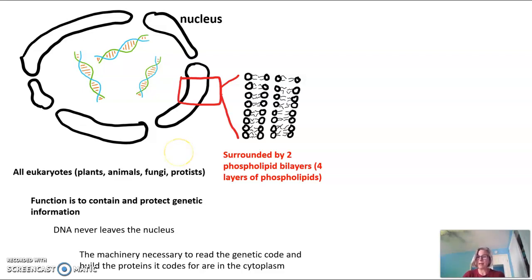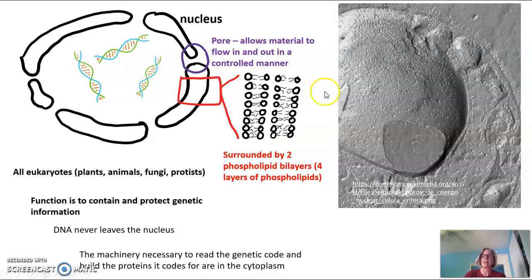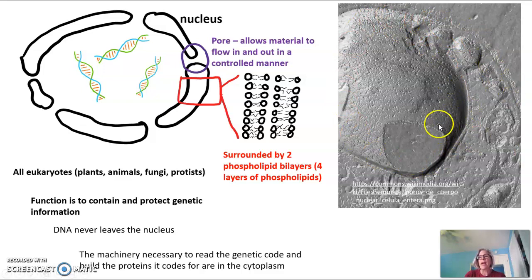The problem is DNA codes for proteins and the machinery necessary to read the genetic code and build those proteins is in the cytoplasm. So how do we get the information out to where the machinery is? That's where the nuclear pore comes in. Nuclear pores are breaks in the nuclear double membrane that allow material to flow in and out in a very controlled manner — like a guard at a gate. In a scanning electron micrograph you can actually see these little pits in the nuclear membrane.